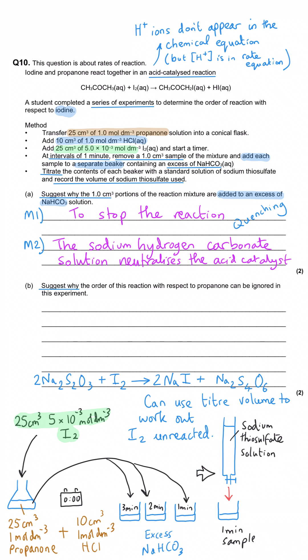Part B asks: suggest why the order of this reaction with respect to propanone can be ignored in this experiment. To answer this we need to look at the instructions. If you look at the volumes, we use 25 cm³ of propanone at 1 mole per dm³ and 25 cm³ of iodine at 5×10⁻³ moles per dm³.